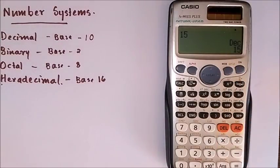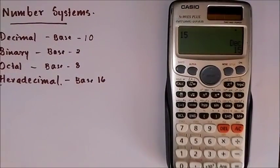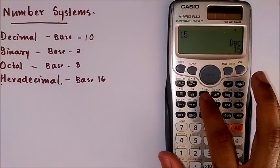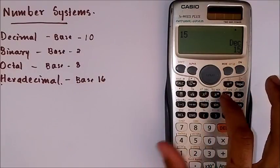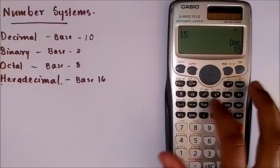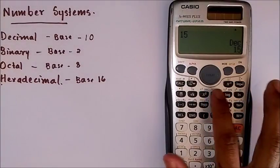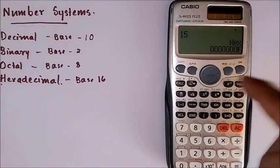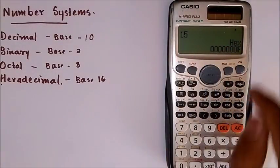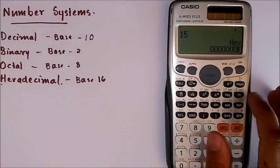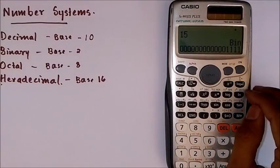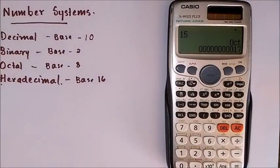Now to calculate the other equivalents in other number systems, we have these switches right here: decimal, hexadecimal, binary and octal. On clicking each we get directly the equivalent. That is, 15 in hexadecimal is F, in binary it is 1111, and in octal it is 17.